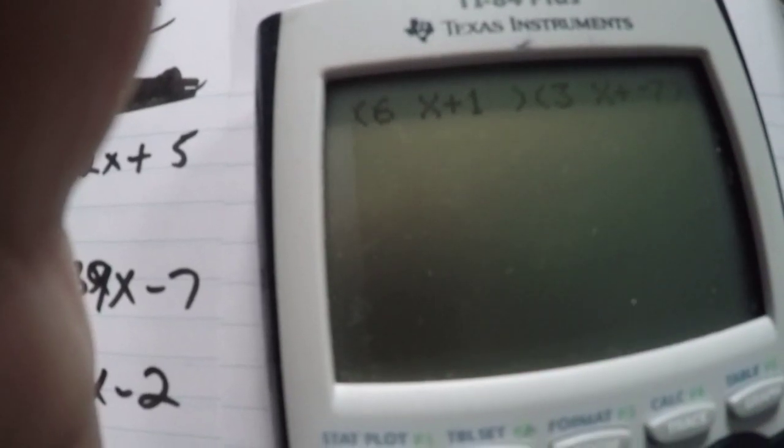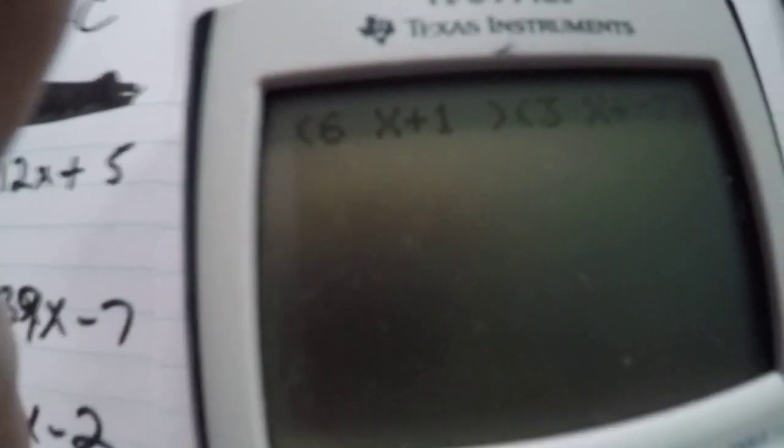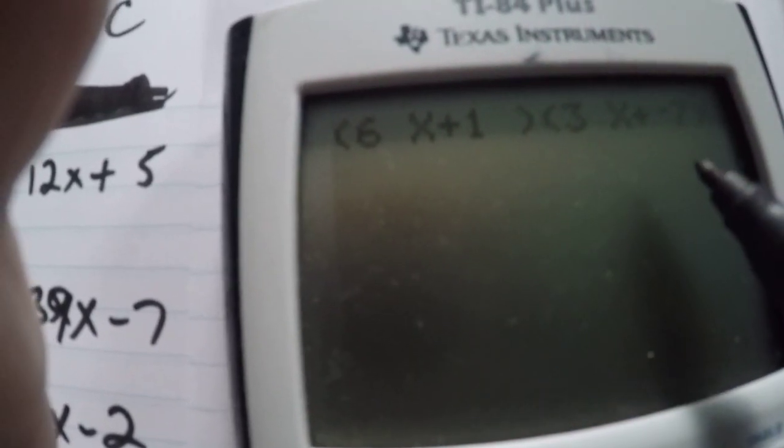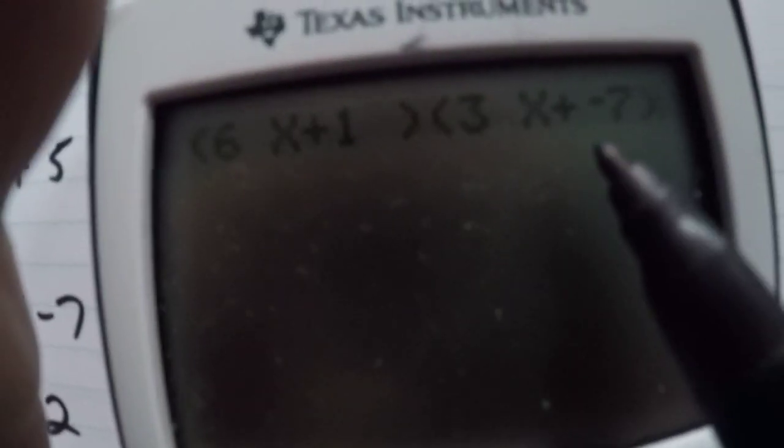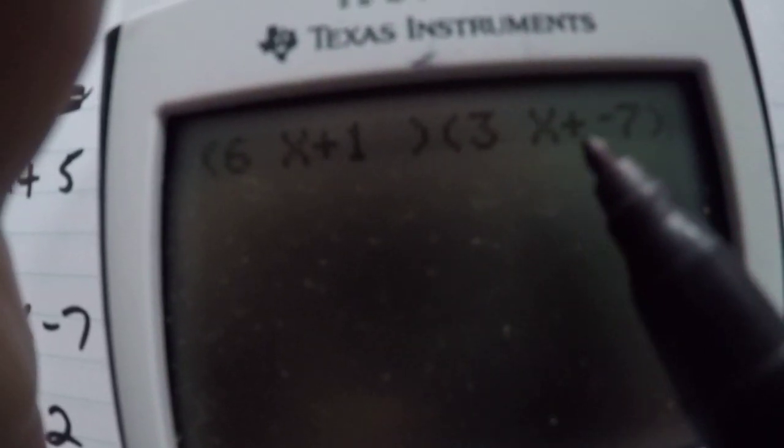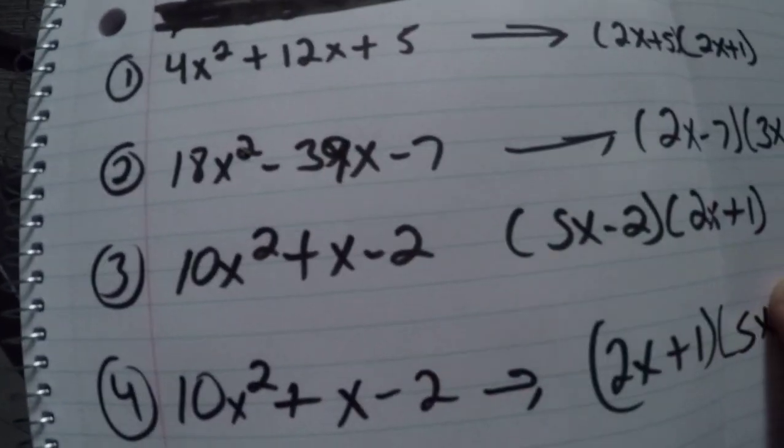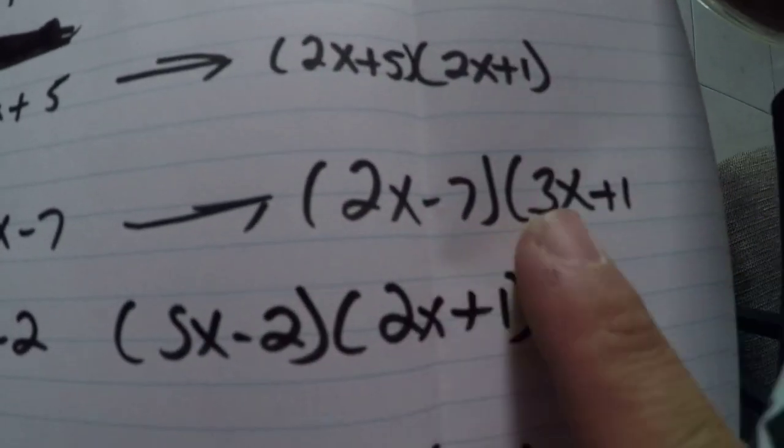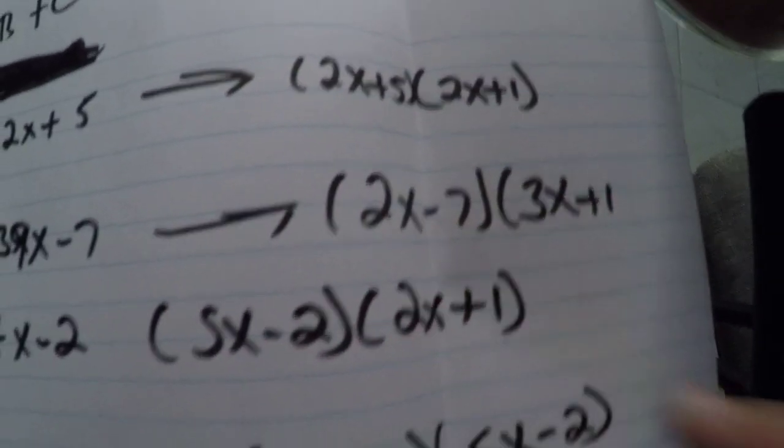So we have 6x plus 1 parentheses. 3x, forget about that plus. When there is a plus and minus the plus don't count. So it will be 3x minus 7 parentheses. Basically the same thing. So that's the answer.